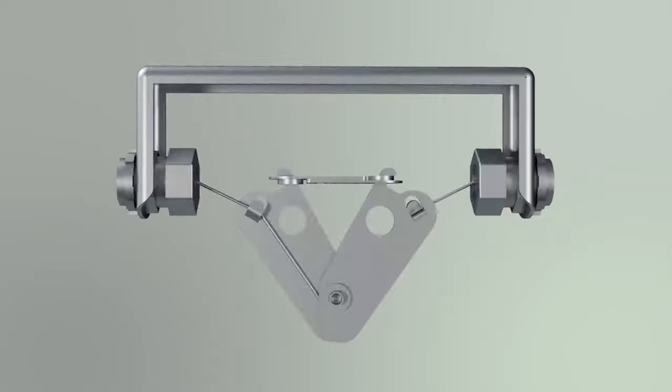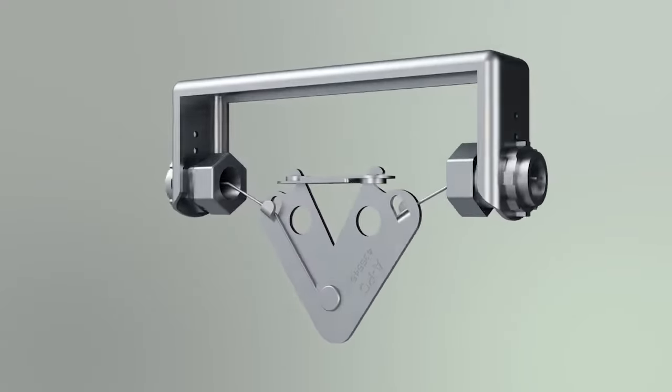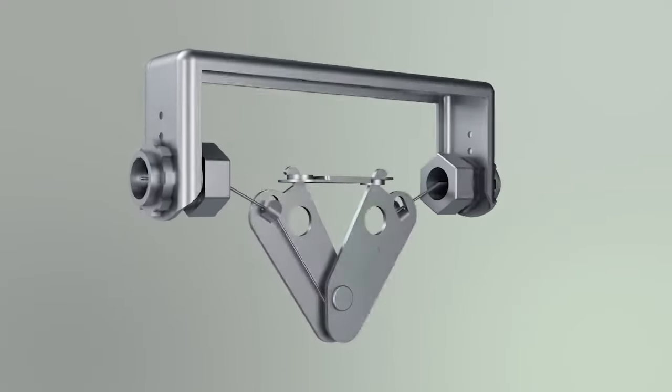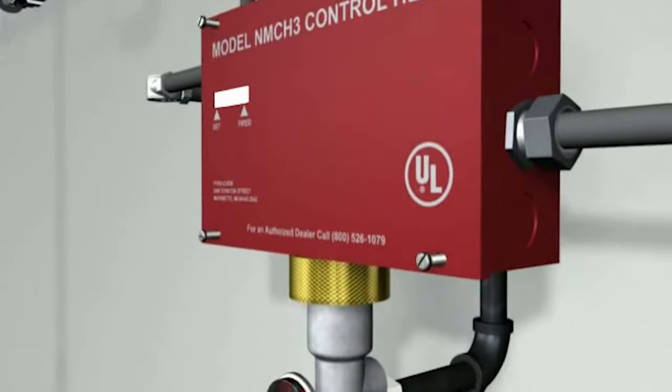In the event of a fire, when the temperature rating of the fusible link is reached, it separates, releasing tension on the wire connected to the mechanical control head located remotely or on the pressurized agent tank.